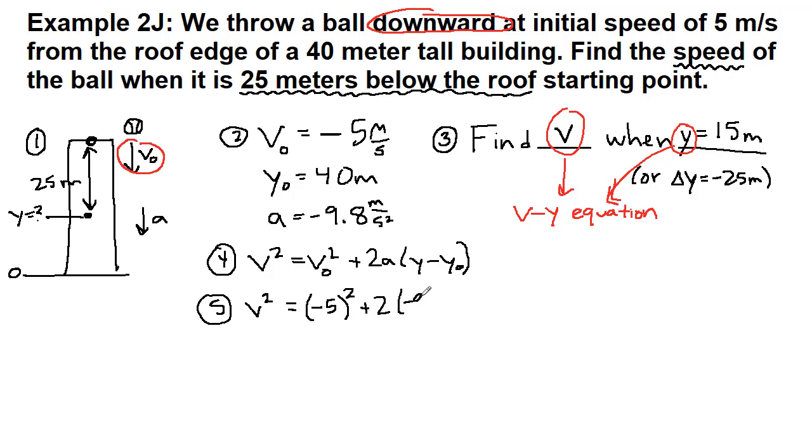Plus two times negative nine point eight, times the final location, 15, minus the initial location, 40. You'll notice that 15 minus 40 is negative 25, and that's what we mean by the change in y.